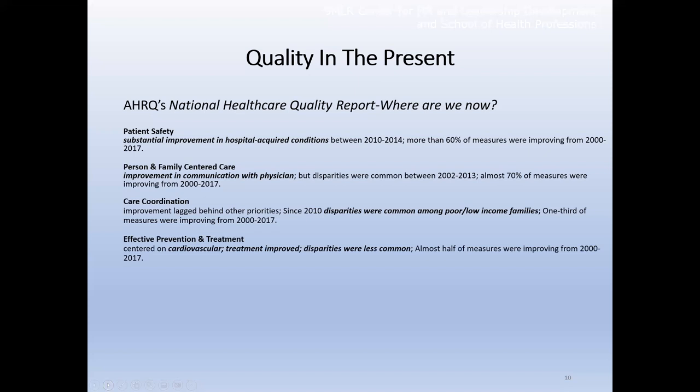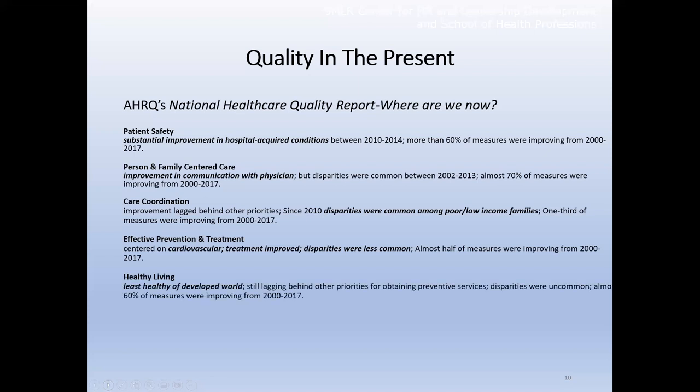In terms of effectiveness and prevention, cardiovascular treatment has improved. Some areas we've improved; others less so. Healthy living is one area we lag behind — the US is one of the least healthy of developed nations. We have people who are health nuts on one end, but we also have a lot of people — particularly where health literacy is low, in rural areas and inner cities — who pull the national average down.